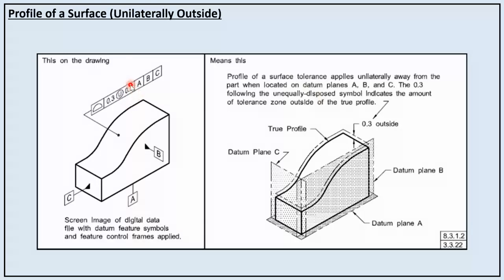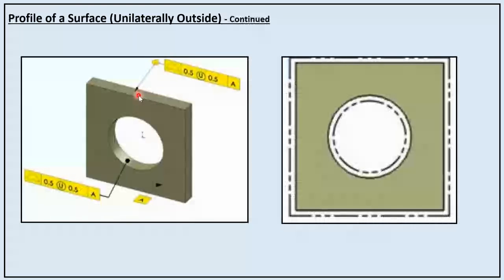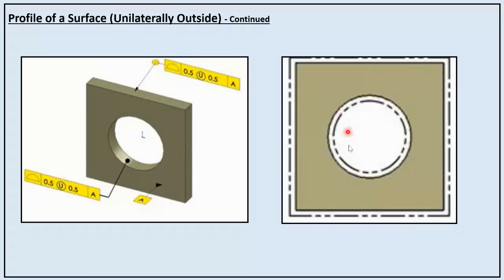In another example, we see a plate with a hole. The profile of a surface has a geometrical tolerance of 0.5, which is unilaterally outside or unequally disposed, with 0.5 outside the part. For the hole case, it is also unilaterally displaced with 0.5. The phantom line for the solid part is outside, and for the hole it is inside, meaning the rectangular component outside is increasing while the hole size is decreasing.